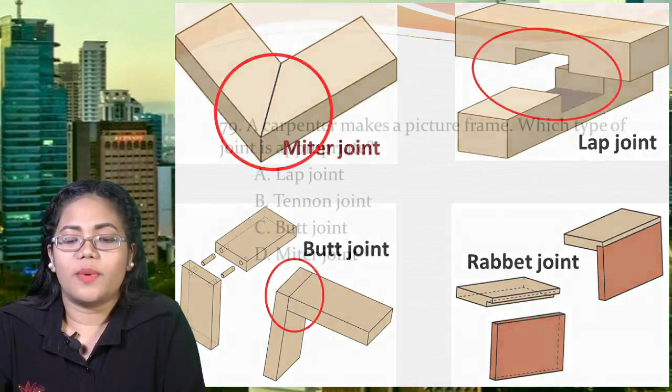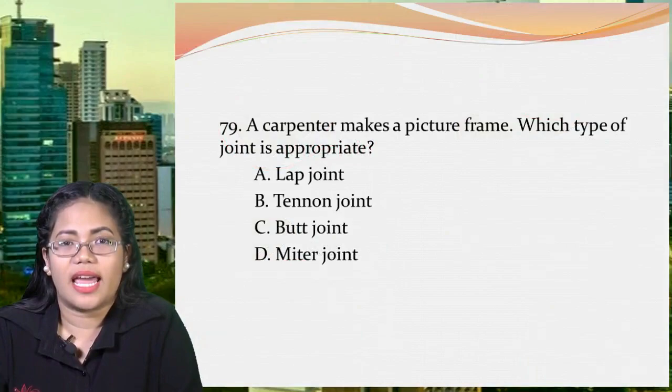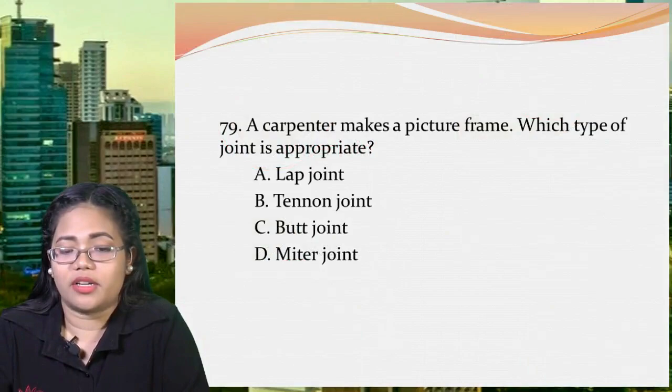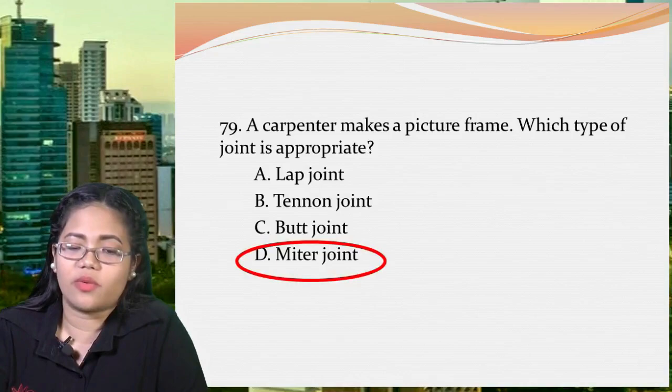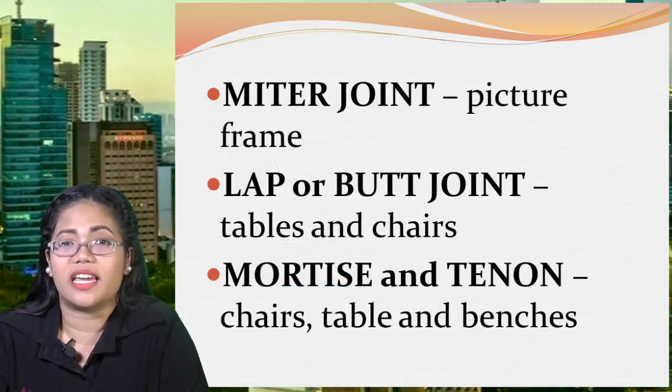Next question: a carpenter makes a picture frame. Which type of joint is appropriate? A: lap joint, B: tenon joint, C: butt joint, or D: miter joint. The answer is miter joint. Key association: miter joint is used for picture frames; lap or butt joint creates tables and chairs; while mortise and tenon is for chairs, tables, and benches.